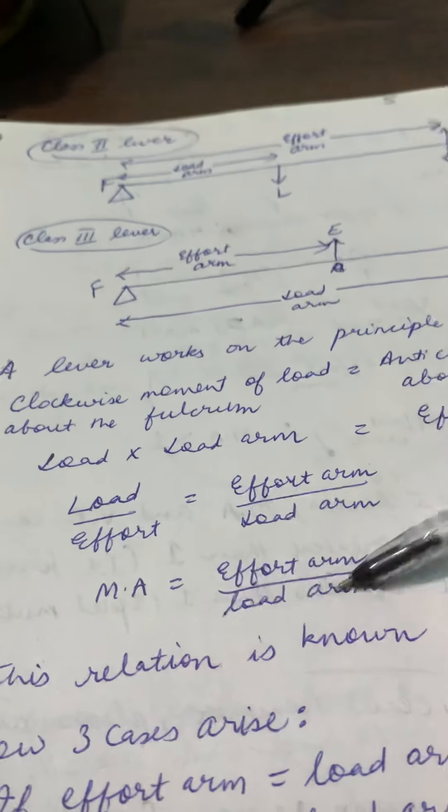So in class one lever, all three cases are possible — the mechanical advantage can be greater than 1, equal to 1, or less than 1 — meaning it can be a force multiplier, a speed multiplier, or neither. For example, shears, crowbar, claw hammer, pliers, and spoon all have mechanical advantage greater than 1, so they are force multipliers. But long-handled scissors have mechanical advantage less than 1, so they are speed multipliers. Both are class one lever examples.